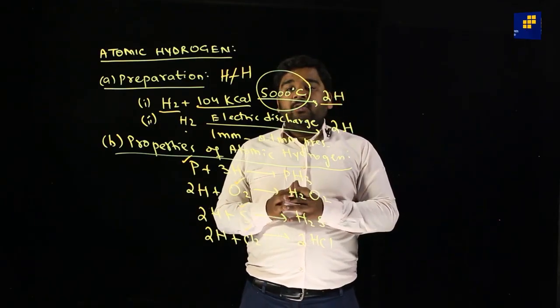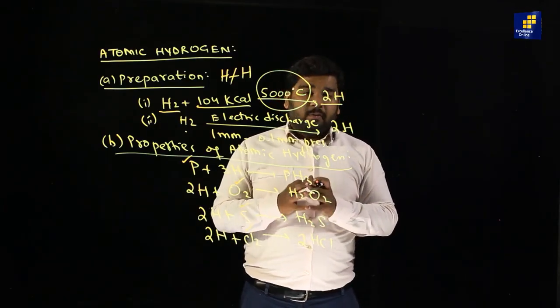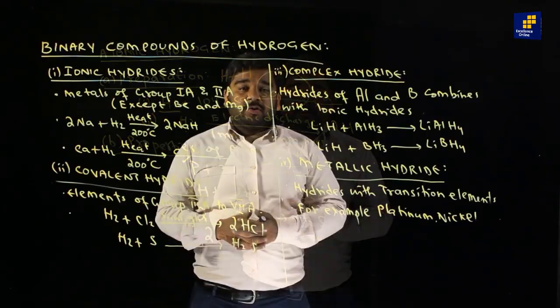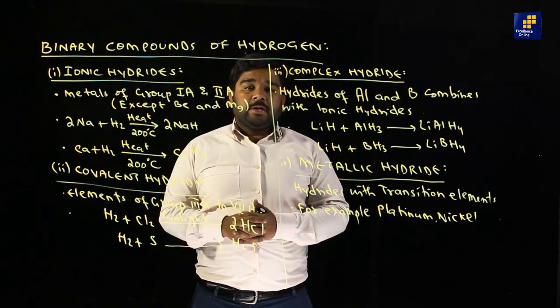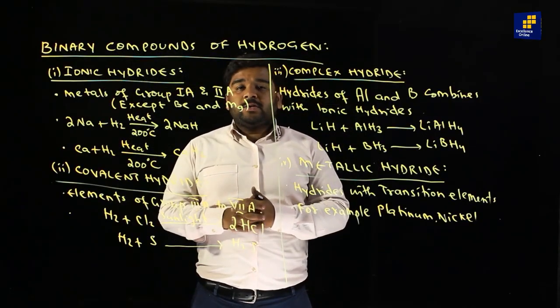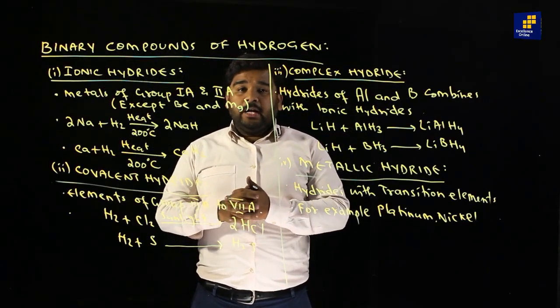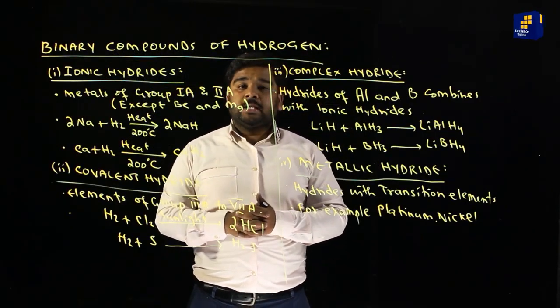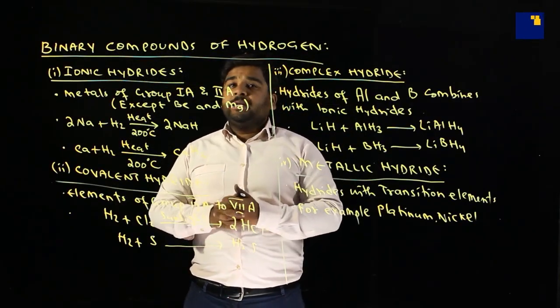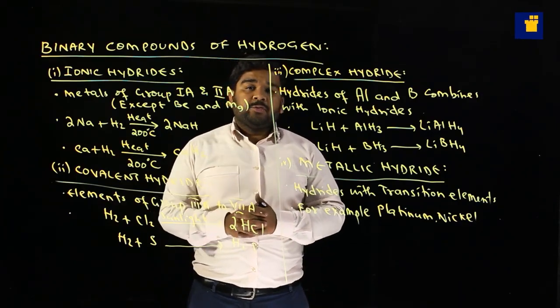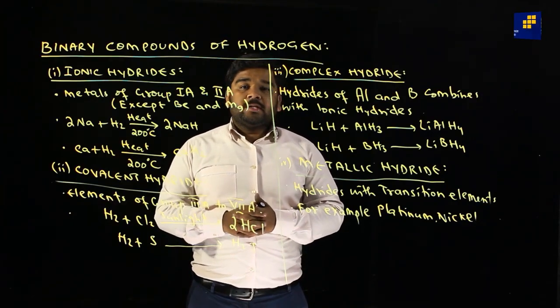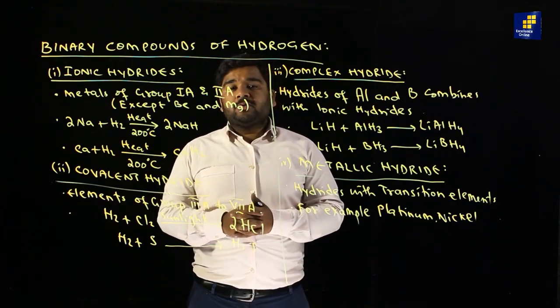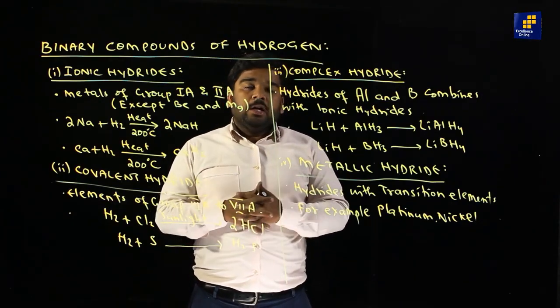जब atomic hydrogen sulfur के साथ react करता है तो H₂S बनाता है, और जब chlorine के साथ react करता है तो hydrogen chloride यानि HCl — hydrochloric acid — form करता है। Atomic hydrogen के बाद next topic जो detail question में exam में पूछा जाता है वो है: binary compounds of hydrogen. Total six binary compounds of hydrogen होते हैं।